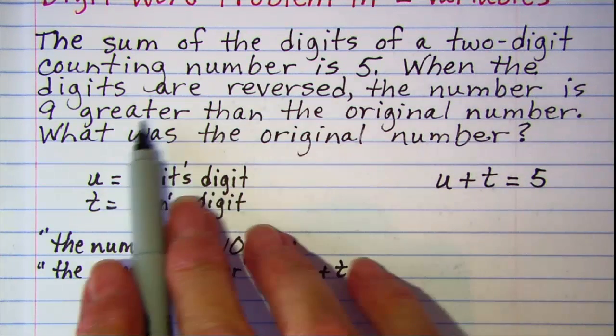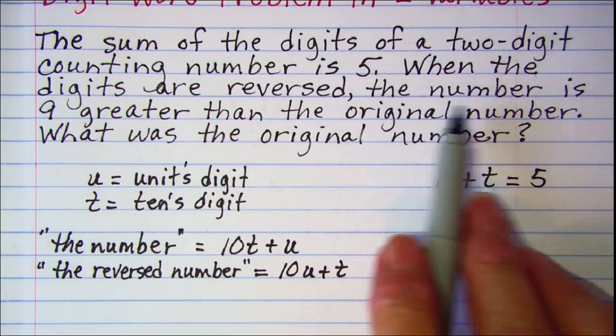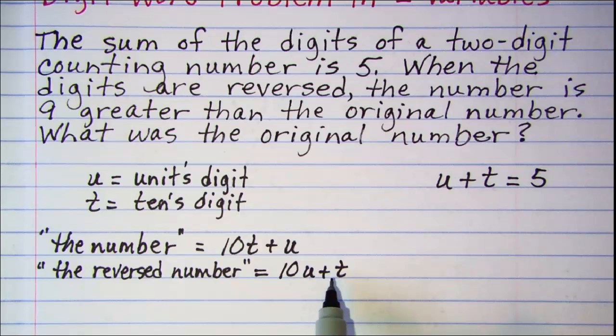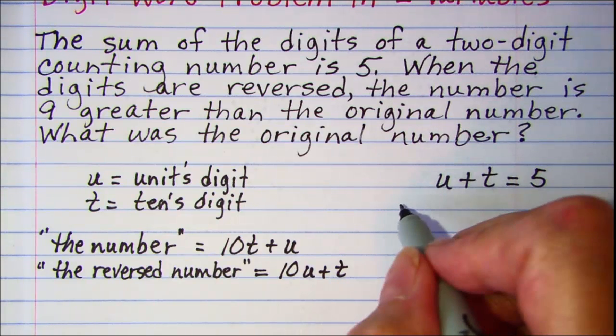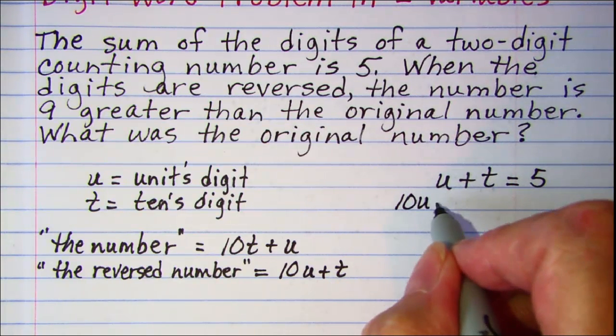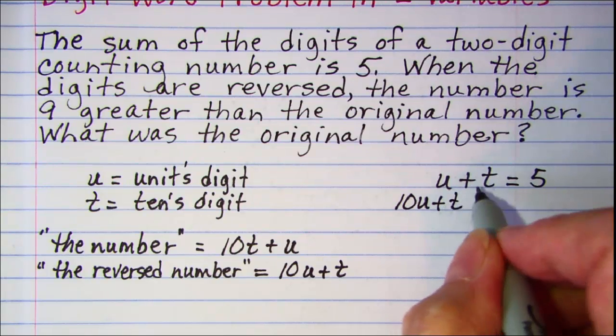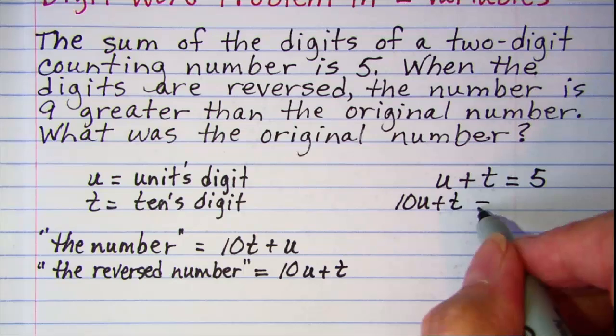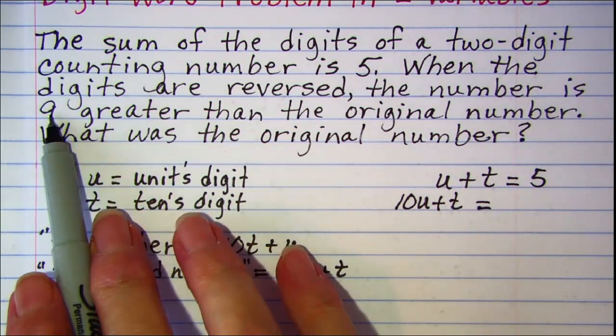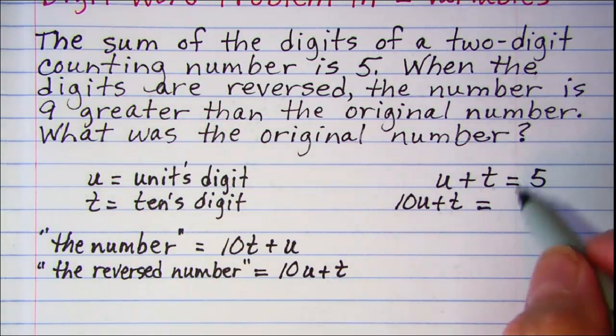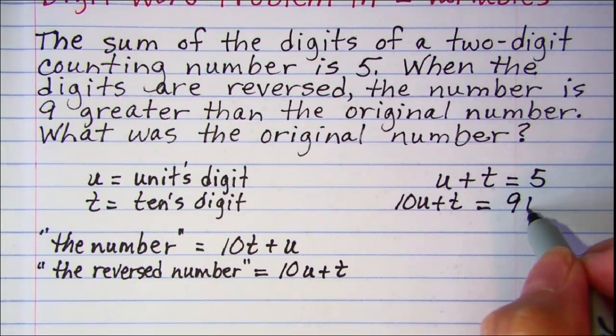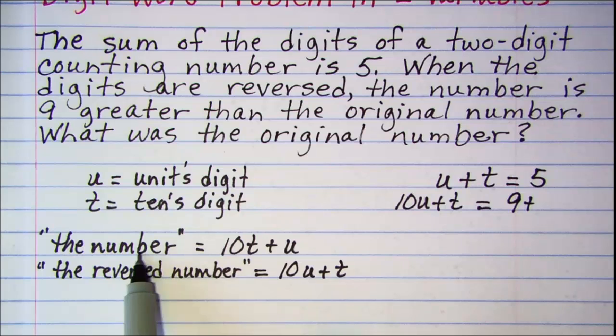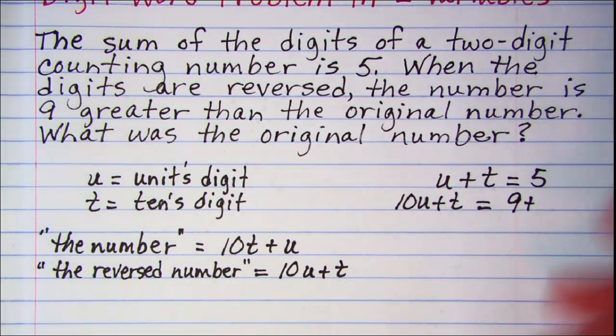Then, when the digits are reversed, the number, so we need to use this expression, 10u plus t is, so that's equals, 9 greater than, so we're adding 9 to something, the original number, which is the number, so 10t plus u.